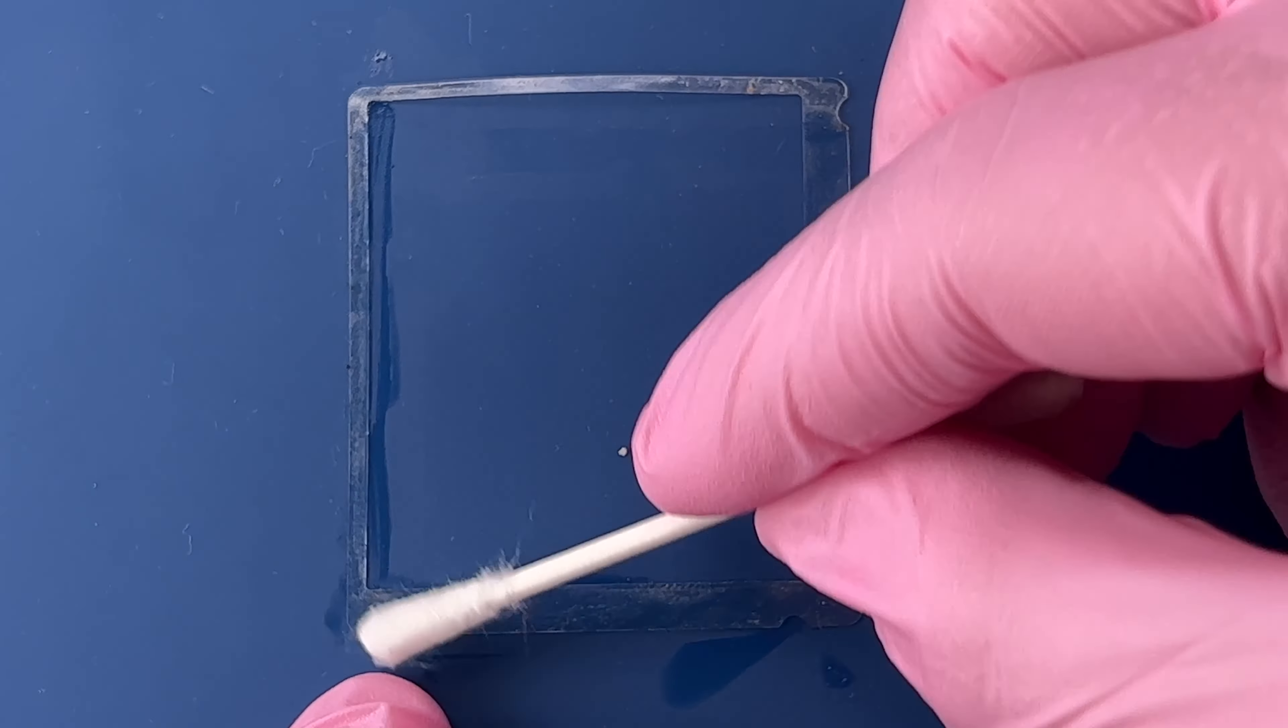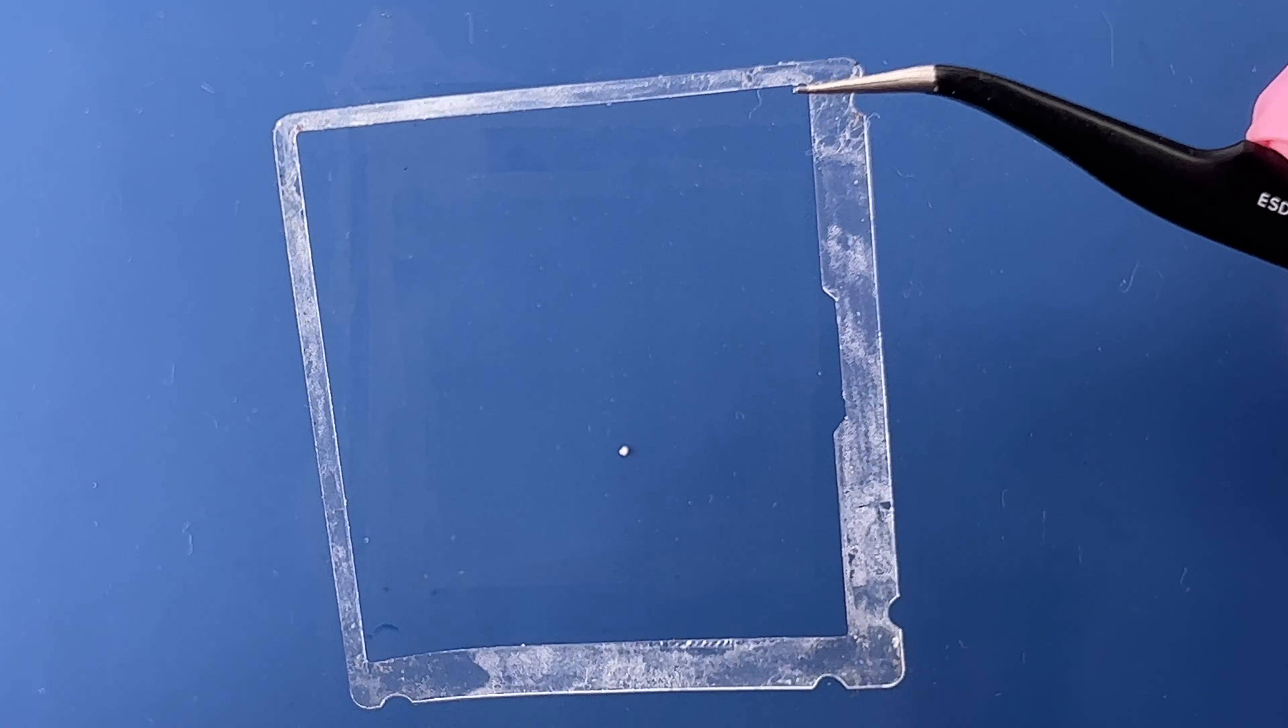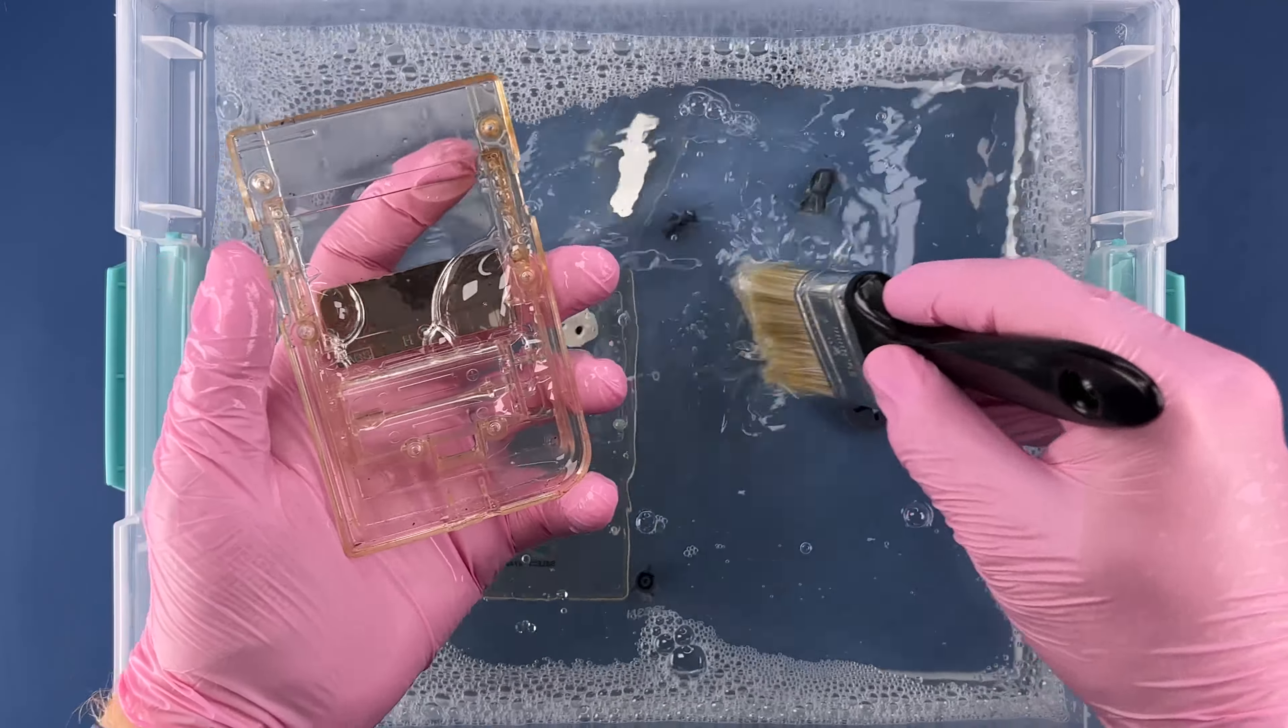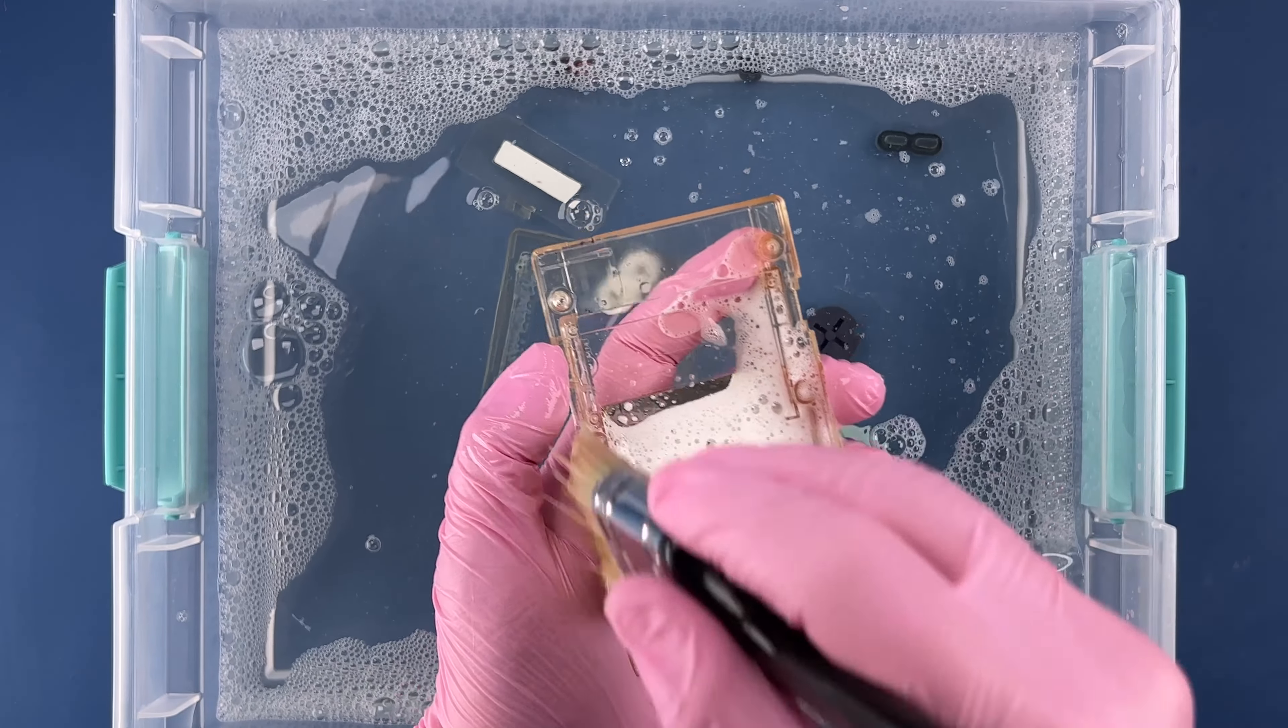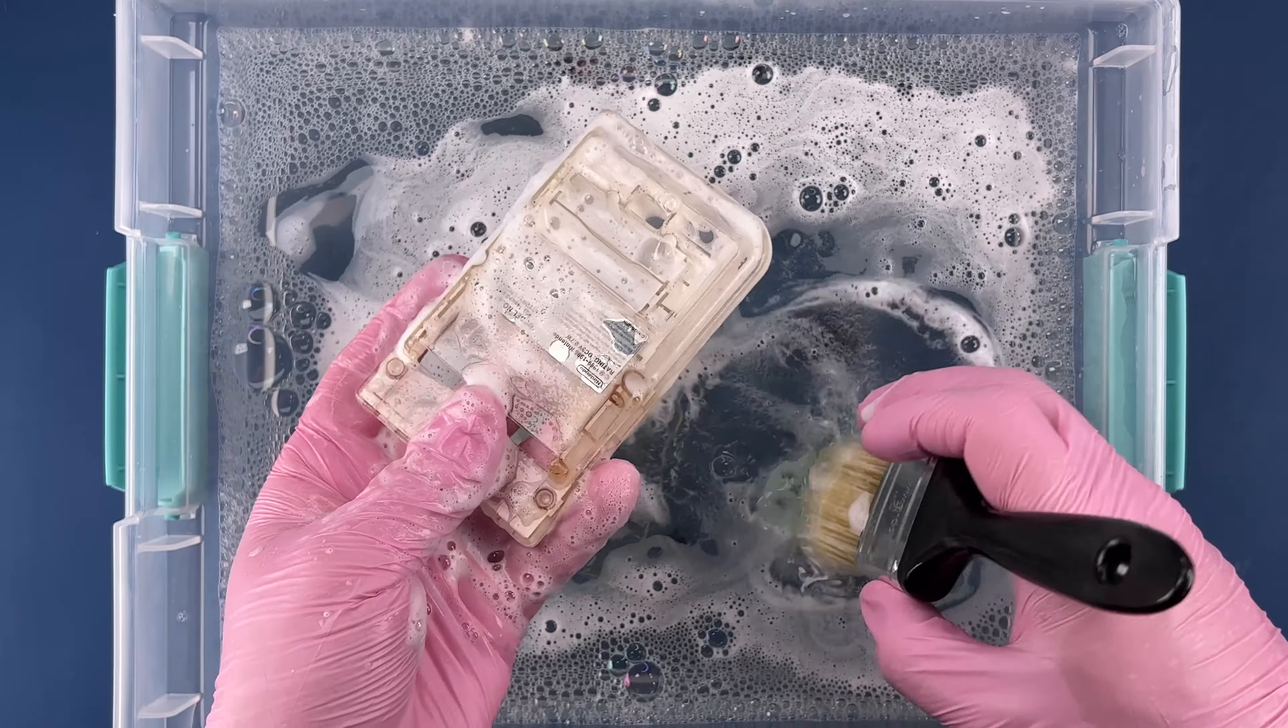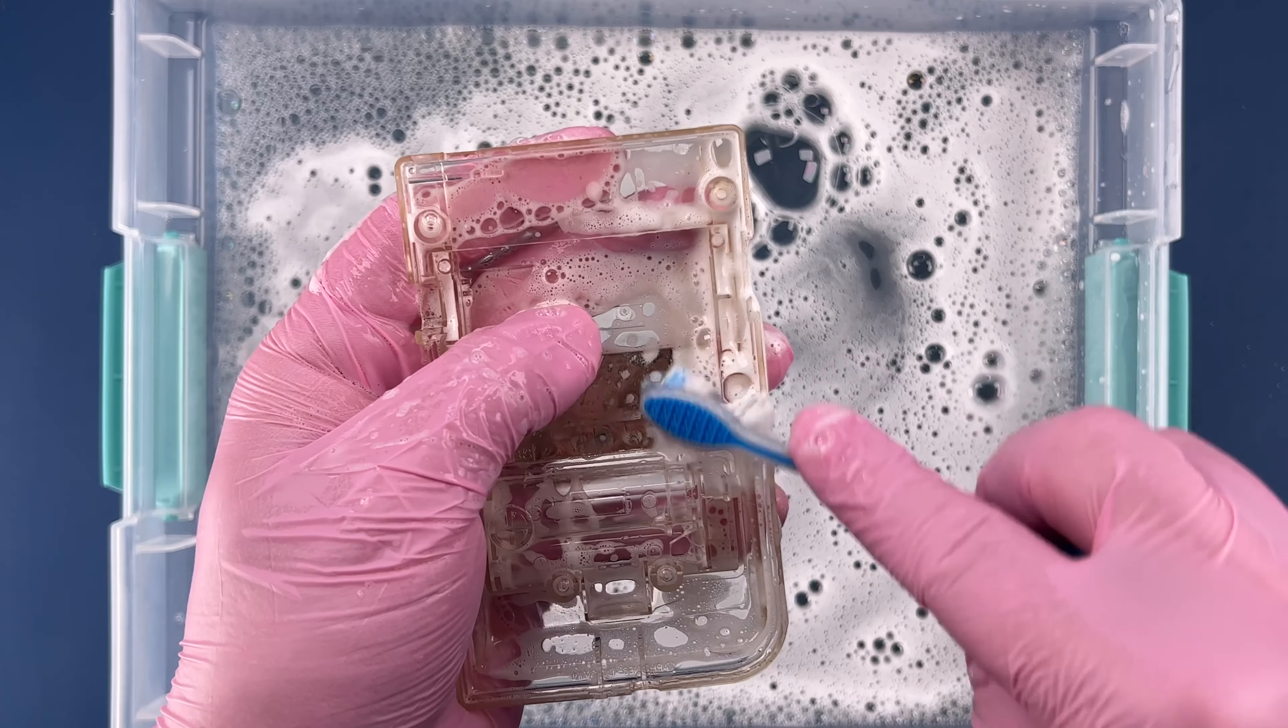I'll use my Q-tip and IPA and just kind of swipe up on the outside of this, removing the gunk from it but retaining the sticky quality once it dries. Let's flip it over and get this side. Let's set that aside, let it dry and we should be good to use it again.